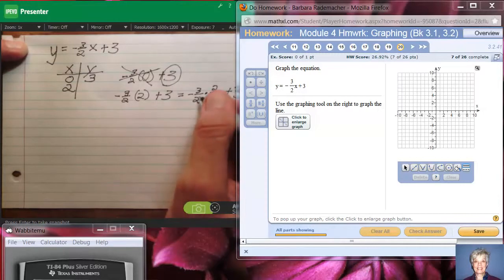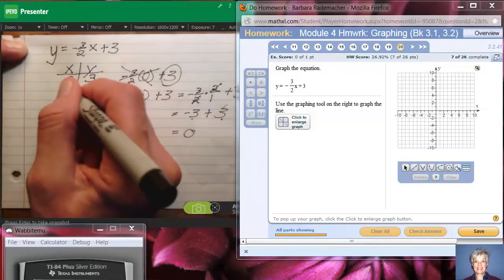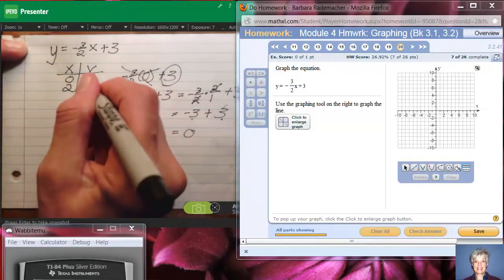Only now look, this 2 and this 2 cancel out, leaving me with -3/1, which is -3. So I'll have -3 plus 3. And what is -3 plus 3? It's 0. So when x is 2, y is 0.